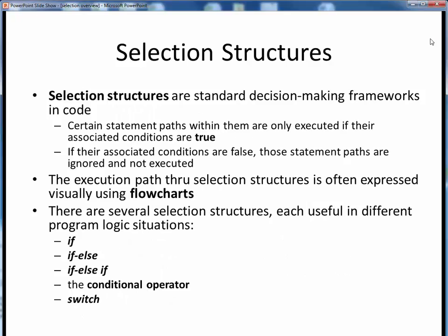Selection structures are just some standard decision-making frameworks in our code. In them, certain statement paths are executed only if their associated conditions are true. Otherwise, if those associated conditions are false, those statement paths are ignored and not executed.